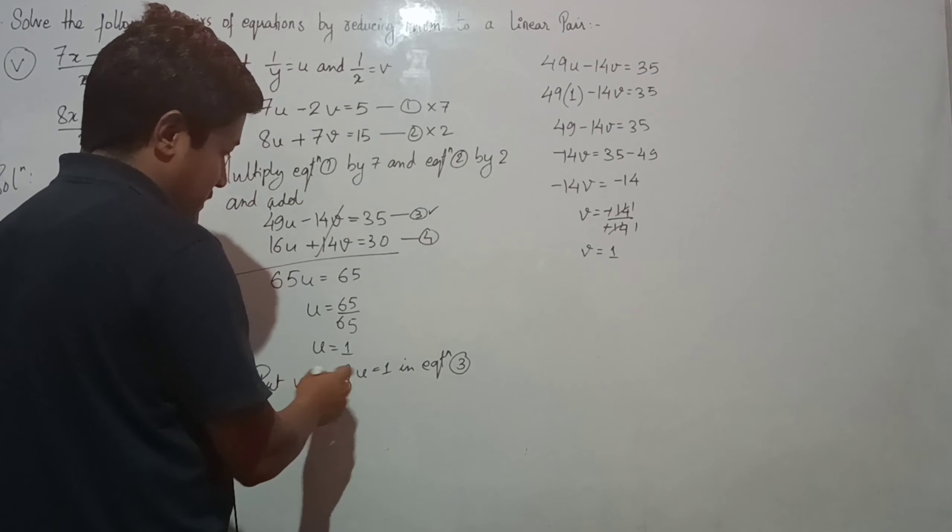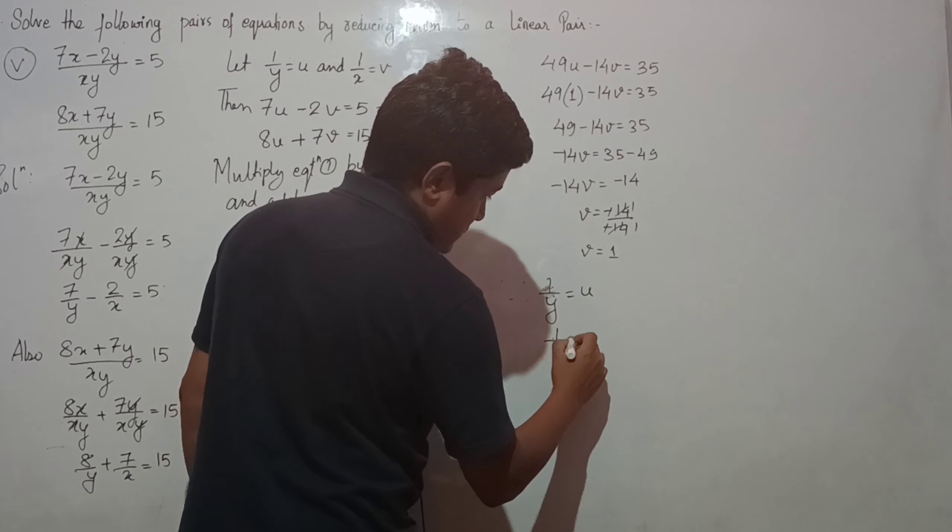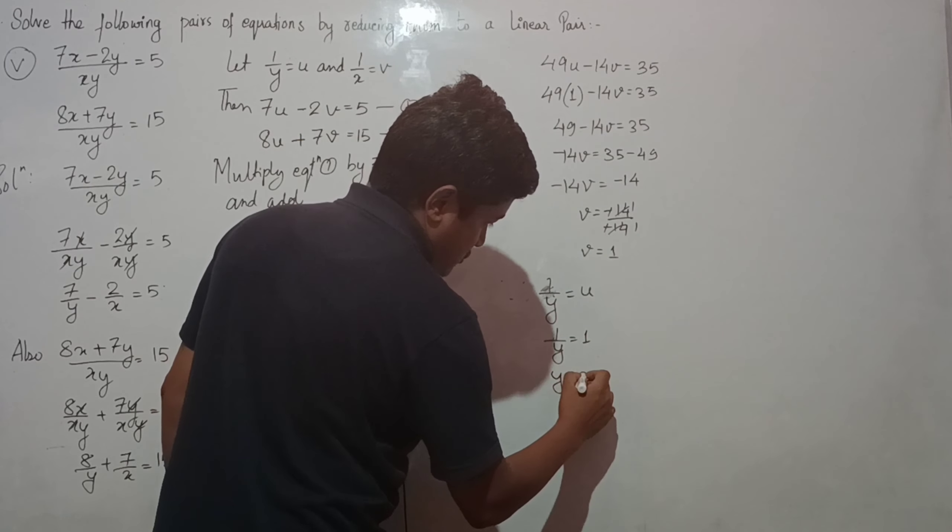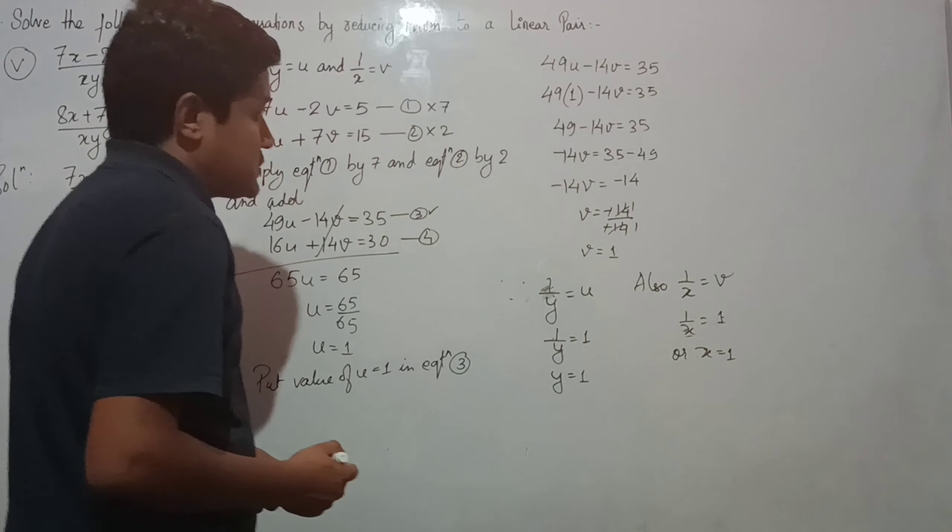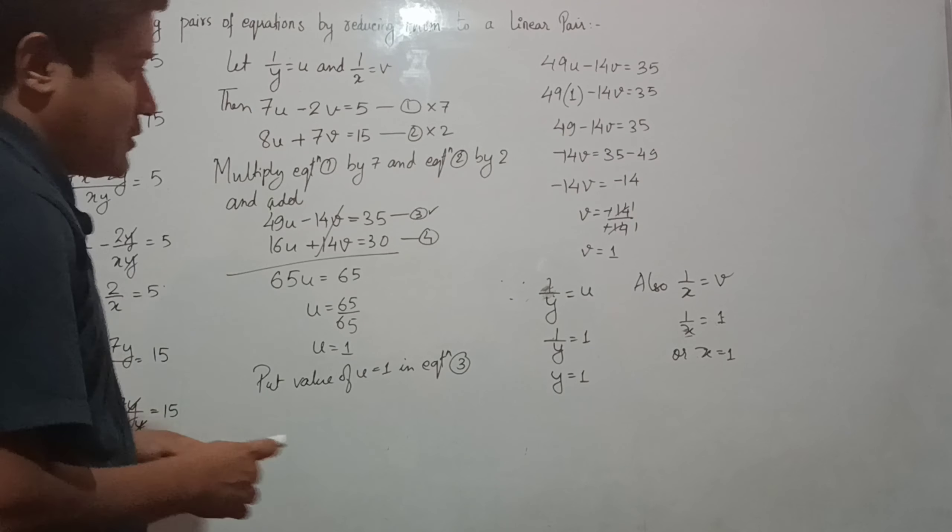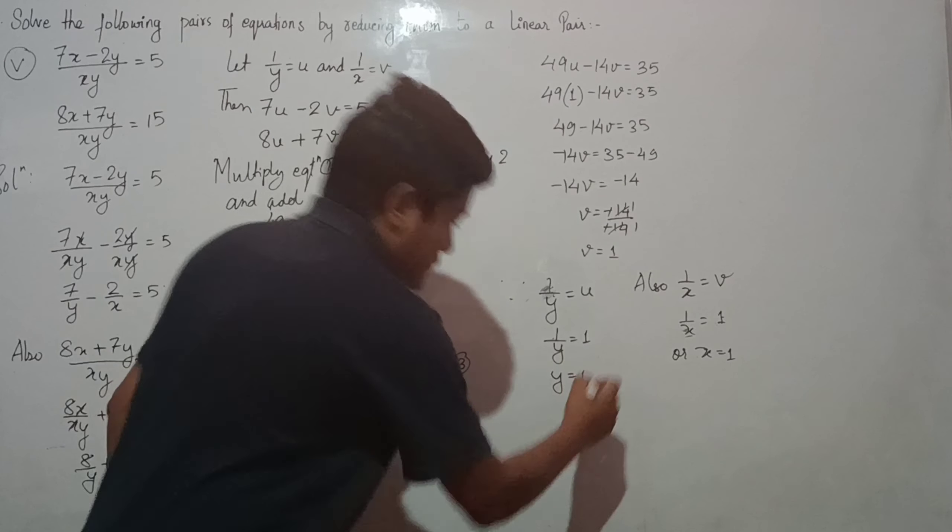Since u equals 1 and we defined u as 1 over y, we have 1 over y equals 1, therefore y equals 1. Similarly, v equals 1 over x equals 1, therefore x equals 1. So both equations have a solution: x equals 1 and y equals 1. Thank you very much.